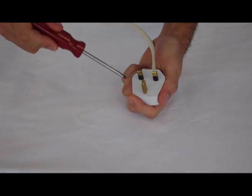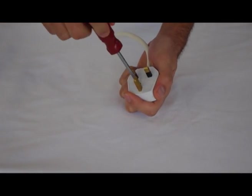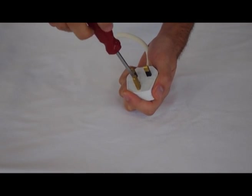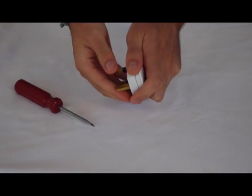Now what you first want to do is get your plug and a flathead screwdriver and remove the main screw that holds the casing together. Once that's done you'll be able to see the insides.